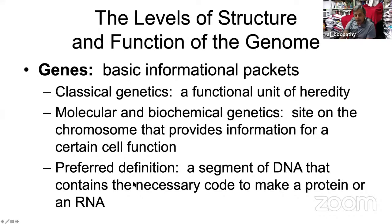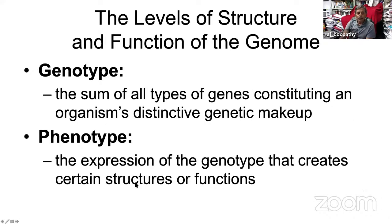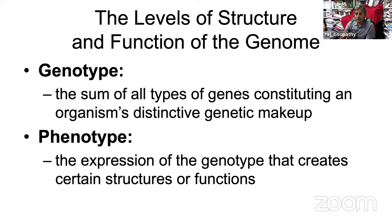At the molecular level, a gene is a piece of DNA that contains the necessary code to make a protein or an RNA. 'Genotype' is the sum of all genes constituting an organism's distinct genetic makeup. 'Phenotype' refers to the physical expression of the genotype — how you look and what kind of function those genes provide.